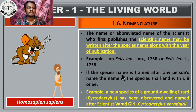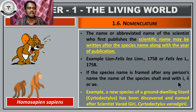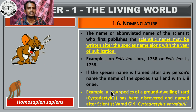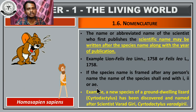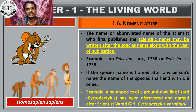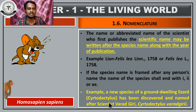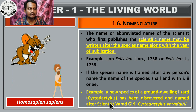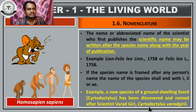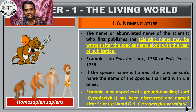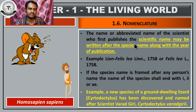Another rule: if the species name is formed after any person's name, the name of the species shall end with '-ii' or '-rae'. For example, a new species of ground-dwelling lizard was discovered and named by the scientist Varadha Giri. The name was written as Crypotactylus varadhagiri-i — see here it ends with '-i'. These are some rules that scientists follow when assigning the scientific name. Also, all scientific names should be in Latin language, because Latin is a dead language — there is no chance for modification.